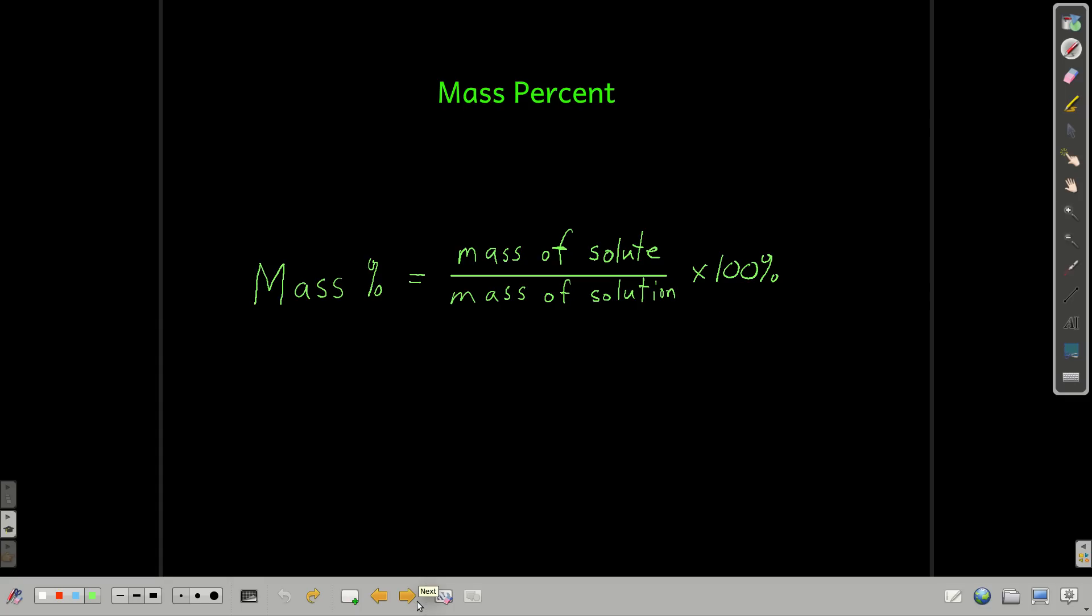The next one, mass percent. Mass percent of a solute in a solution is just the mass of the solute divided by the mass of the solution times 100%. The mass can be in any units as long as it's the same on top and bottom. Grams and grams, kilograms and kilograms, ounces and ounces, pounds and pounds.